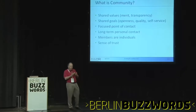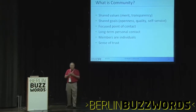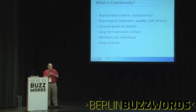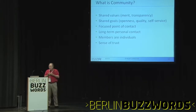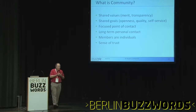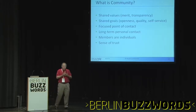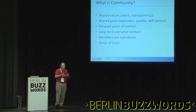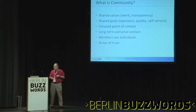So what is community? We have shared values with merit and transparency. We have shared goals around openness, quality, and self-service. We have a focused point of contact in the Apache mailing list — kind of focused, because there are many lists to follow. We have long-term personal contact; we've been involved in open source since 1976. Doug's been in it forever. People know each other — there's a personal bond, it's like family. Members are individuals — that's a really important feature of our community. There's a sense of trust: if I say I'll do something this week, people know it'll really happen two weeks from now, but there's trust that I care about what they want and they care about what I want.